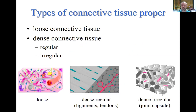Concerning connective tissue proper, we have all three types here: the loose, the dense regular, and the dense irregular. The dense irregular forms the joint capsule, connecting bones and encompassing the fluid inside. The dense regular connective tissue forms ligaments and tendons — the tougher structures. The loose connective tissue is found ubiquitously in the human body between stiffer structures, such as between the articular capsule, ligaments, tendons, and muscles.